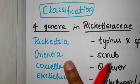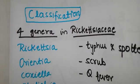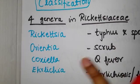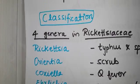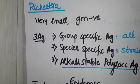So Rickettsia causes two types of illnesses: typhus and spotted fever. Orientia causes scrub fever, Coxiella Q fever, Ehrlichia causes ehrlichiosis and febrile illness.